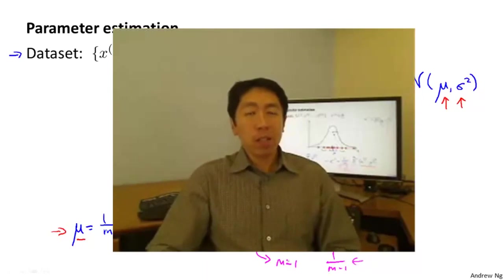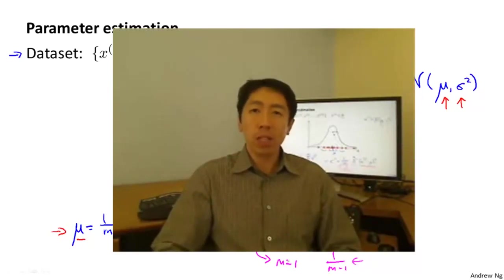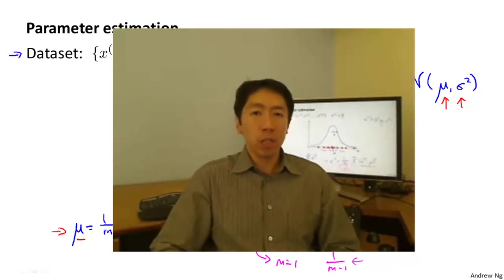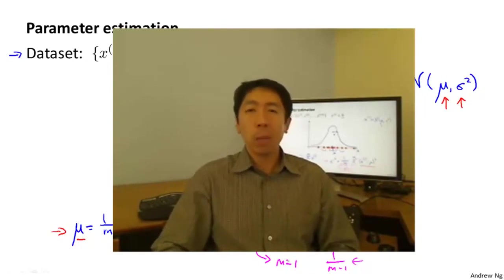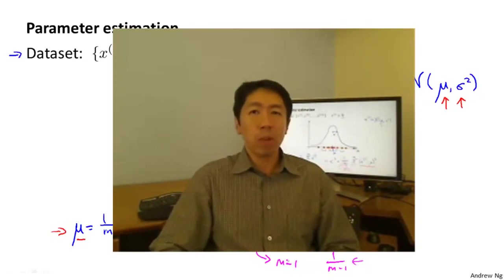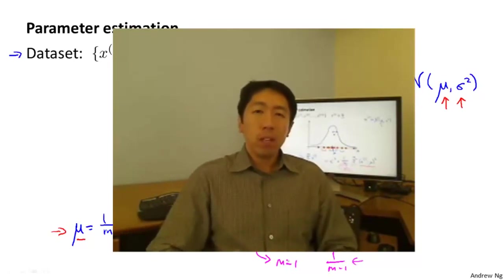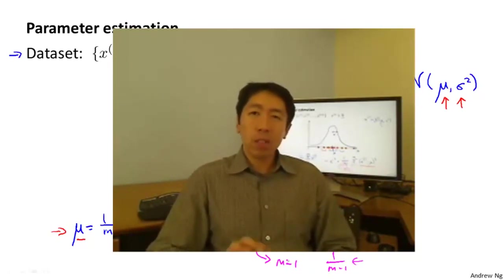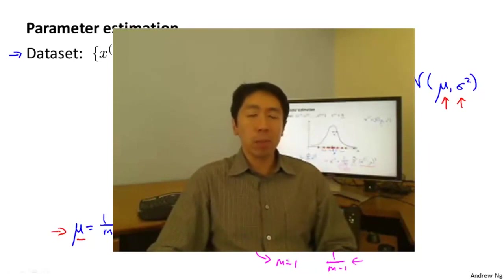So hopefully you now have a good sense of what the Gaussian distribution looks like, as well as how to estimate the parameters mu and sigma squared from a training set. In the next video, we'll take this and apply it to develop an anomaly detection algorithm.